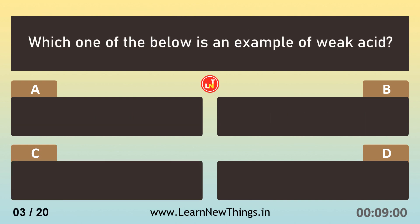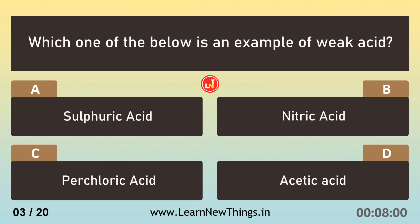Which one of the below is an example of weak acid? Acetic Acid.